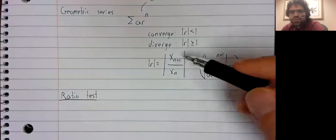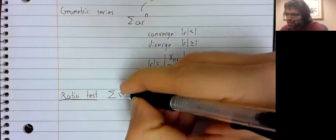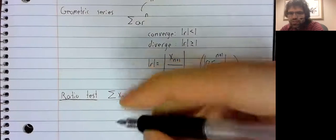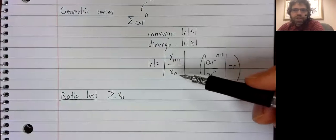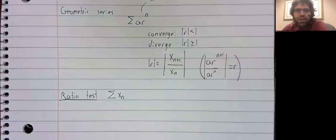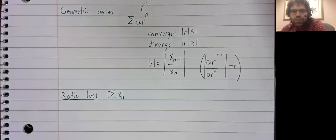The ratio test for an arbitrary series involves looking at these ratios. Having said that, there are a few differences. First of all, for an arbitrary series,